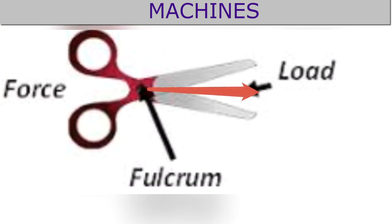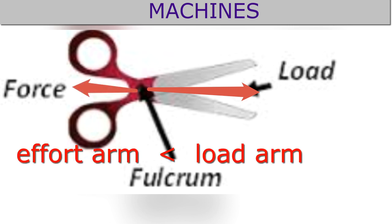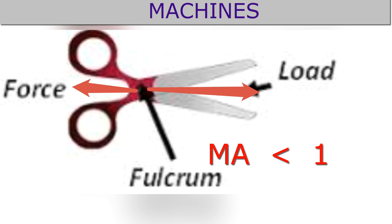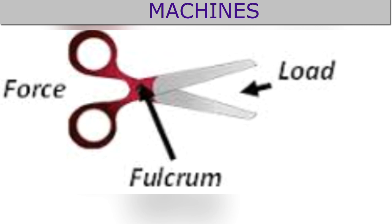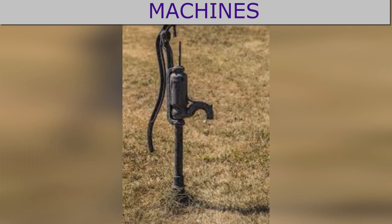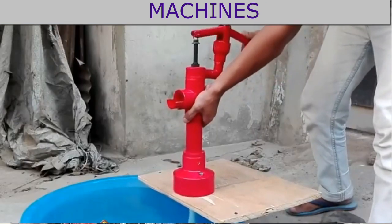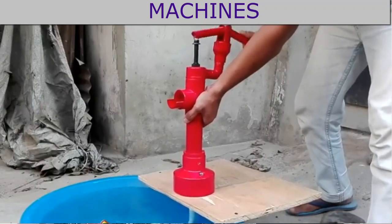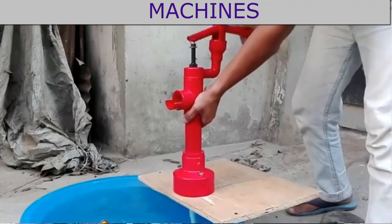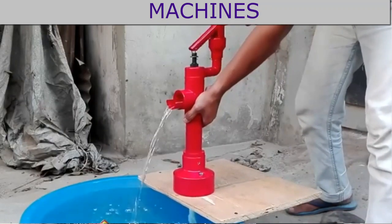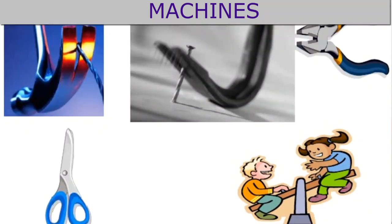In the case of scissors with a blade much longer than the handle, the effort arm is shorter and the load arm is longer, so mechanical advantage is less than 1 and such machines are used to gain speed. The handle of a water pump is also an example of gain in speed. So class 1 levers can function as force multipliers, speed gainers, and to change the direction of effort.